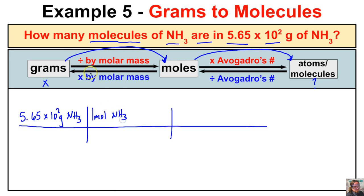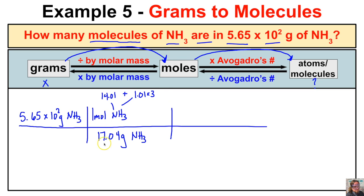From our periodic table, one mole of NH₃ is 17.04 grams. Nitrogen is 14.01 and hydrogen is 1.01, with three hydrogens so we multiply by three: 14.01 + 3.03 = 17.04 grams per mole. Now for the second step, we convert moles to molecules. One mole of NH₃ contains 6.02 × 10²³ molecules of NH₃.